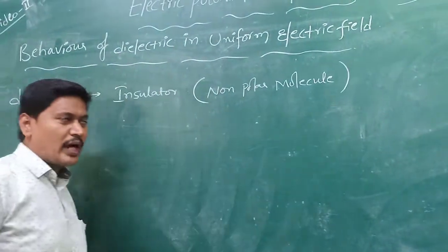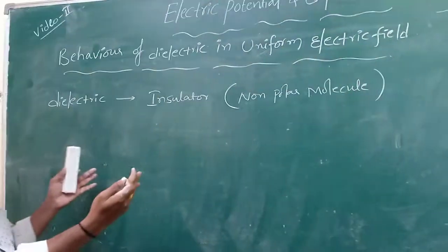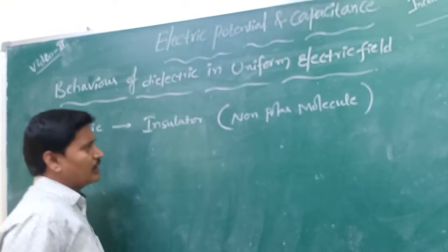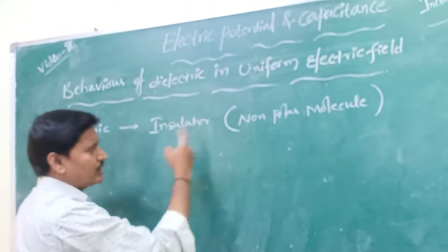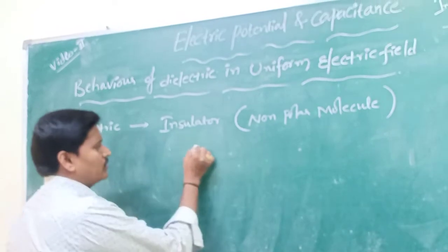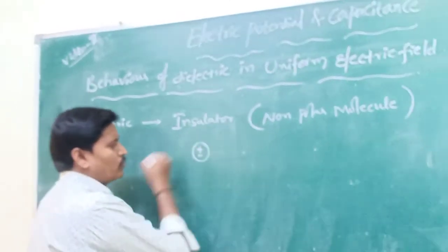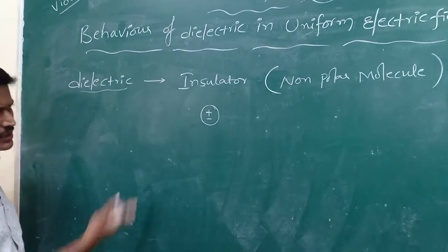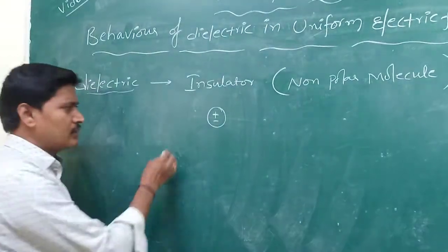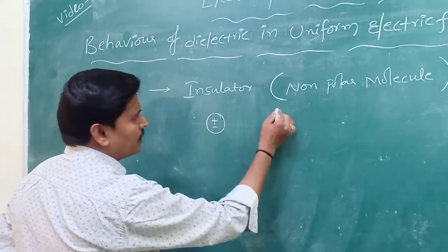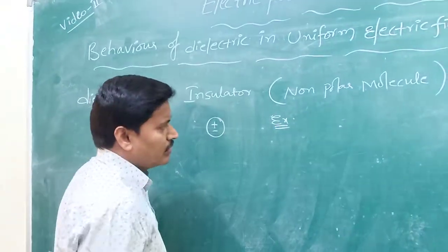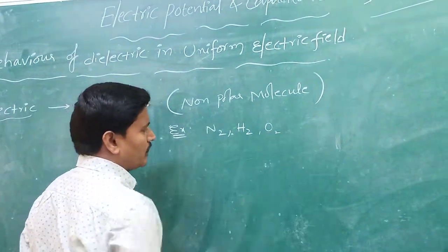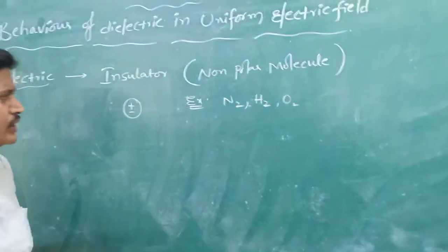In a non-polar molecule, positive and negative charges both are fixed at a single point, so it is electrically neutral. Examples of non-polar molecules are N2, H2, O2, and similar molecules. The dielectric is electrically neutral — positive charge and negative charge both coincide at a single point. That is a non-polar molecule.